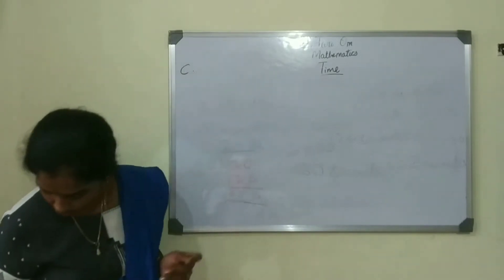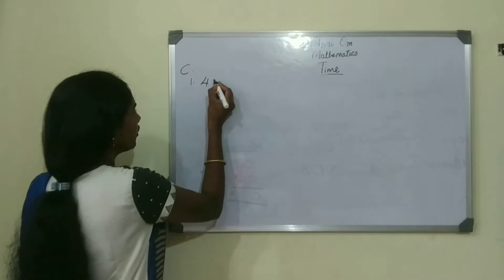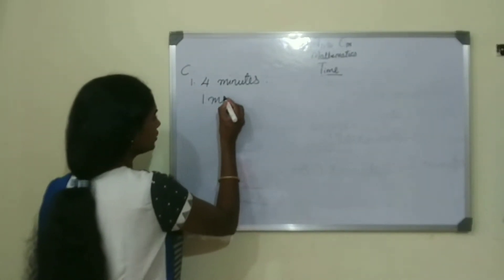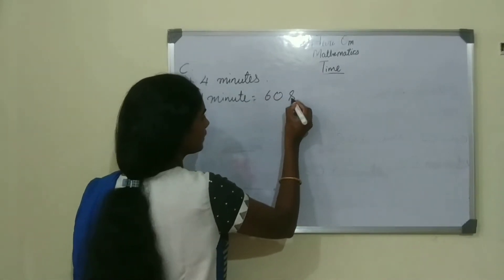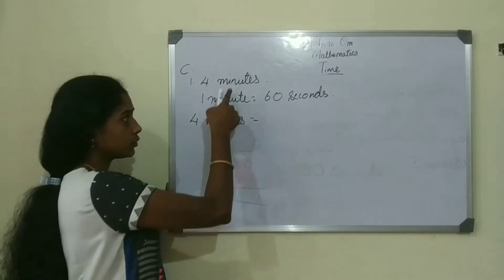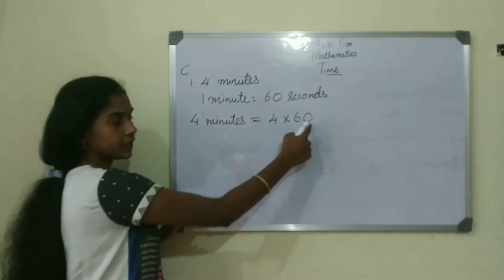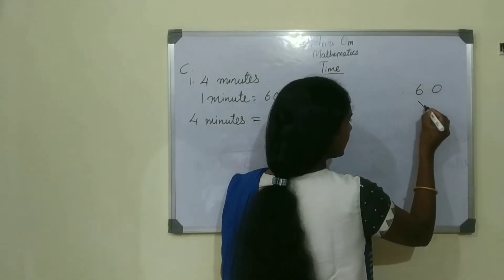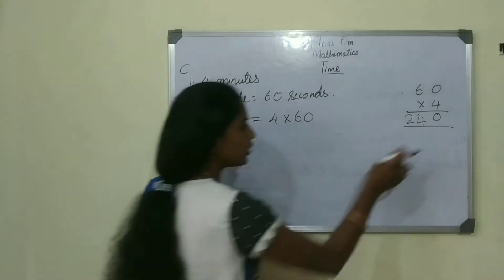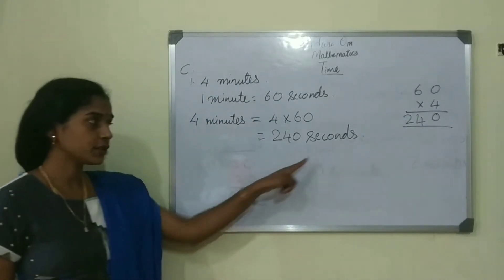4 minutes. 1 minute is equal to 60 seconds. So 4 minutes is equal to 4 into 60. 4 zeros are 0, 6 fours are 24, so the answer is 240 seconds. We should never forget to write the units.